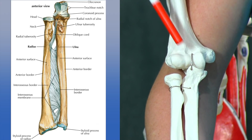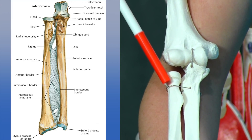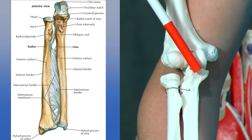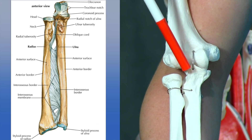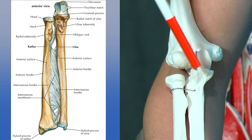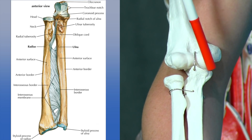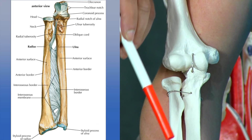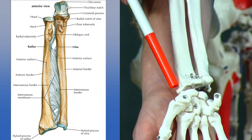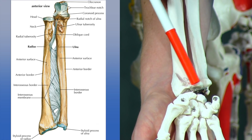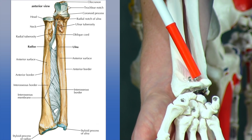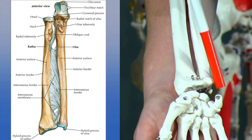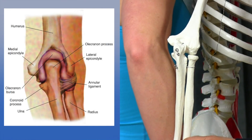To recap the main bony landmarks: at the proximal radius we have the radial head, radial neck, and radial tuberosity. On the proximal ulna we have the coronoid process, the radial notch, the olecranon process on the back, and the trochlear notch. At the distal radius we have the styloid process, the articular surface, and the ulnar notch. At the distal ulna we have the ulnar head and the styloid process of the ulna.